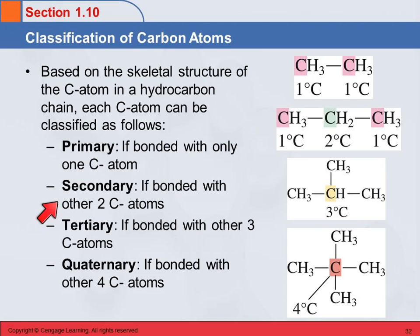It's a secondary carbon if it's bonded to two other carbon atoms. So there's some sense here. One is primary, two is secondary. Then three, if it's bonded to three carbons, it's tertiary. If it's bonded to four, it's quaternary.